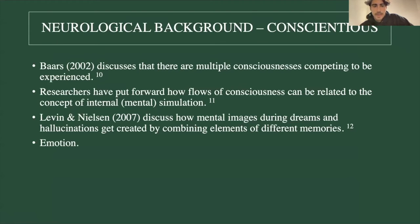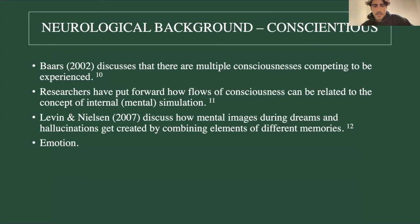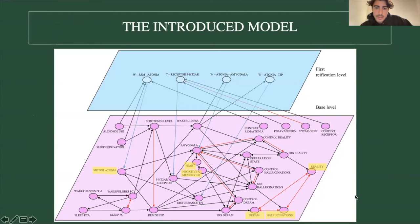Baars has proposed a theory where multiple consciousnesses compete to take the spotlight, with eventually one winning — all without the individual knowing, because they just experience one consciousness. This can be seen in the model in the bottom right, where we use three types of consciousness: dream, hallucination, and reality-type consciousness — these compete with each other and eventually one is experienced. Researchers further put forward that flows of consciousness can be related to internal simulations, and every type of consciousness has its own sensory representation state.